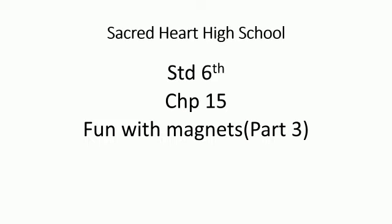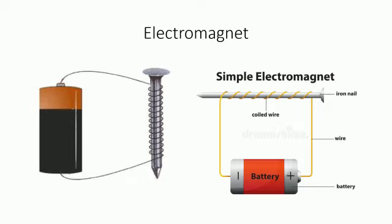Hello students, welcome to the online classes of Sacred Heart High School. Today we are going to study Chapter 15 Fun with Magnets Part 3 Electromagnet. An electromagnet is a type of magnet in which the magnetic field is produced by an electric current.